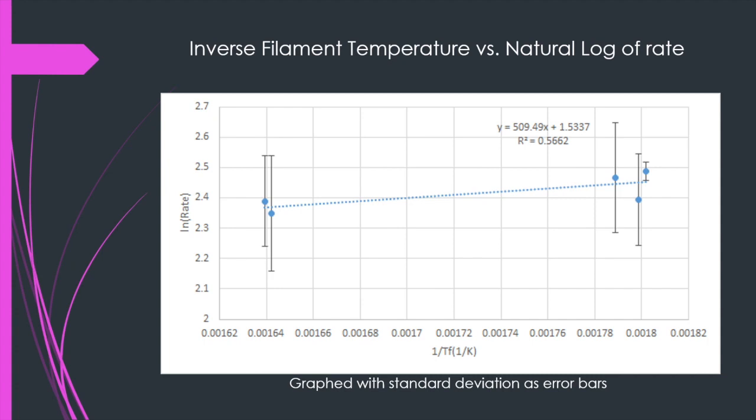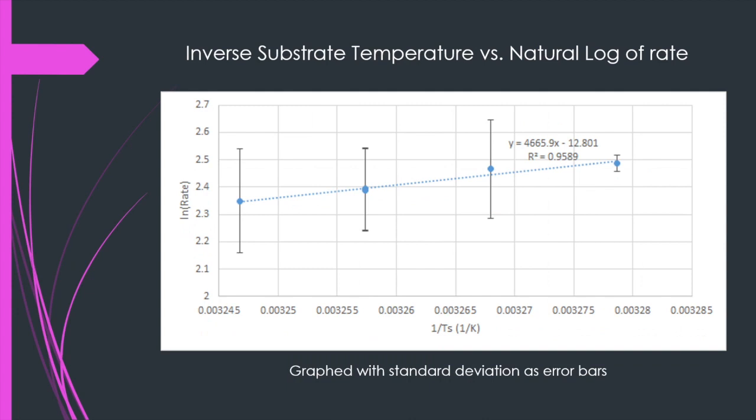The following two graphs show the data provided by Hoxers and Kelting. The first one shows the inverse filament temperature versus the natural log of rate. You can see that the r squared value is 0.5662 which means there's no correlation between the temperature and the rate. However, when the inverse substrate temperature versus the natural log rate was graphed the r squared value is 0.9589 which means as the temperature decreases the rate increases, which proves that this is an exothermic reaction.